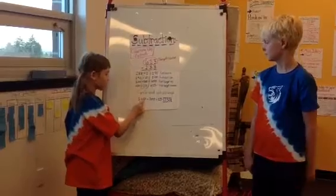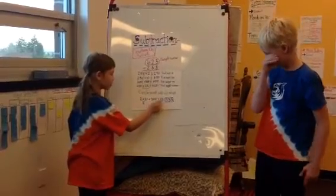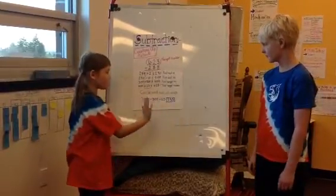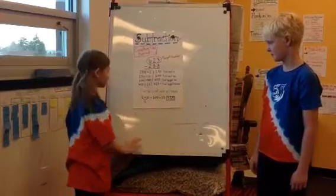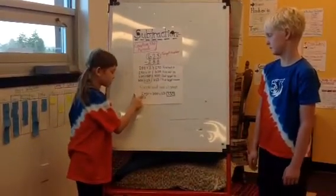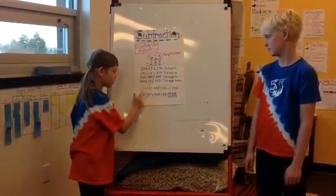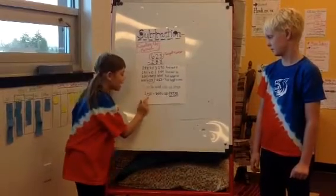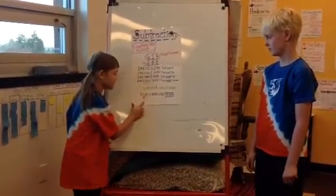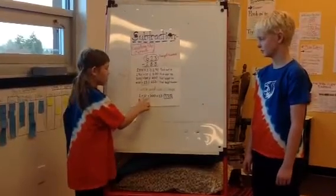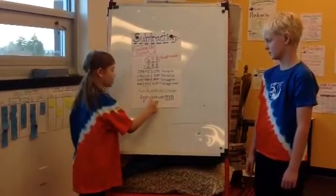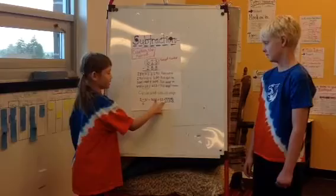Now, 2 plus 10 plus 300 plus 23 equals, but hang on, before we do the answer, see this right here, that means 2 plus 10 equals, and then they put the answer, 2 plus 10 right here, and then they did plus 300 plus 23 equals.